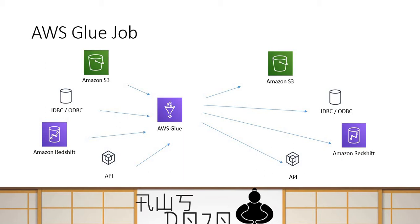Such a job you can either schedule at a certain frequency, start based on an event, or configure it as part of a workflow. Recently, AWS announced that they now support streaming data for Glue.